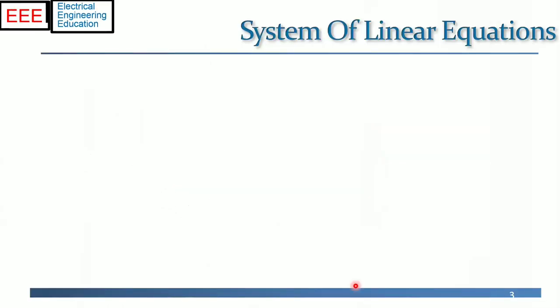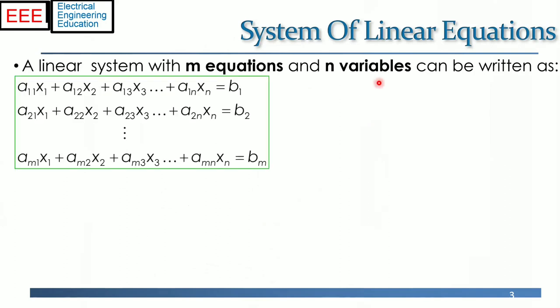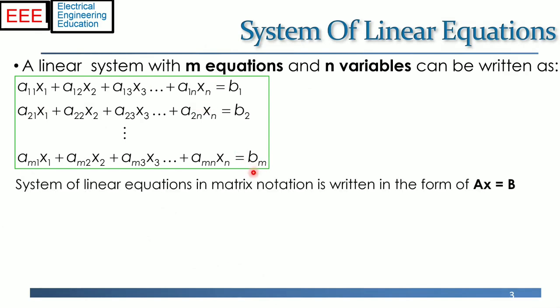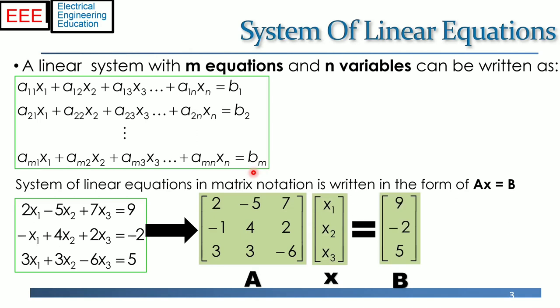A system of linear equations is a finite set of linear equations. Generally, a linear system with m equations and n variables can be written as in the top left. An example of system of linear equations with 3 variables or 3 unknowns is as shown on the left bottom, which can be transformed to a coefficient matrix multiplied with column vector x which contains the variables or unknowns, to result in the constant column vector b.